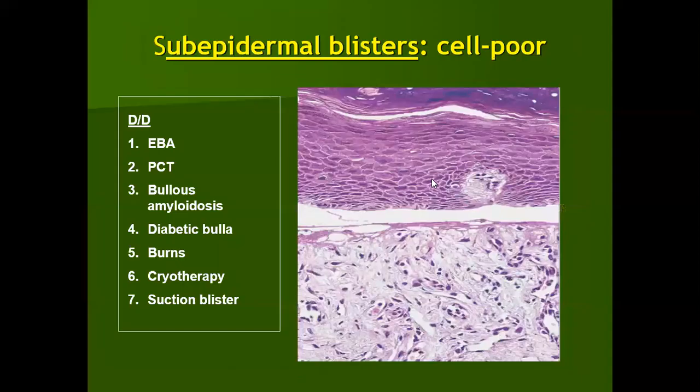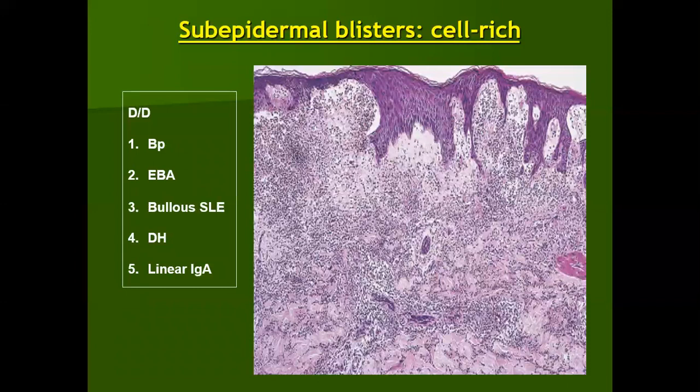Cell-poor sub-epidermal blisters: if we see a well-formed sub-epidermal blister with no particular inflammatory infiltrate, the differential diagnosis includes epidermolysis bullosa (in a child), epidermolysis bullosa acquisita (in an adult), porphyria cutanea tarda, bullous amyloidosis, diabetic bulla, burn, cryotherapy, or suction blister. Cell-rich sub-epidermal blisters include bullous pemphigoid, epidermolysis bullosa acquisita (which can present as either), bullous SLE, dermatitis herpetiformis, and linear IgA disease.